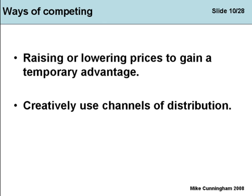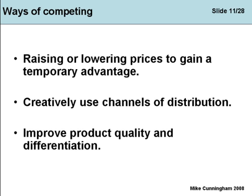Another way of competing is by using distribution channels more effectively — for example, selling in DIY stores if it's a household product, or in a supermarket, or even online. Creative use of distribution channels is another way of competing. A company could also improve the quality of the good, make it more contemporary, change the design, texture, or functionality of the product. By changing quality and perception of quality, greater branding will occur and the product will be differentiated, at least in the mind of the consumer.